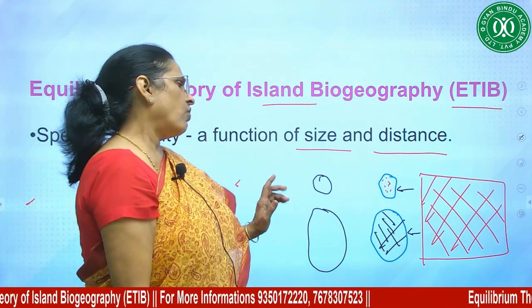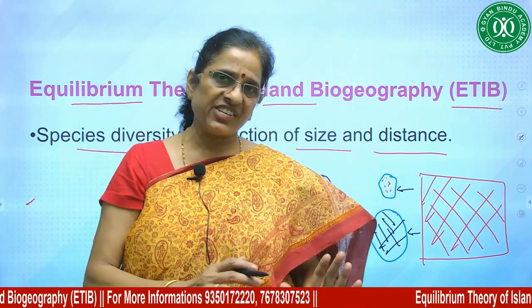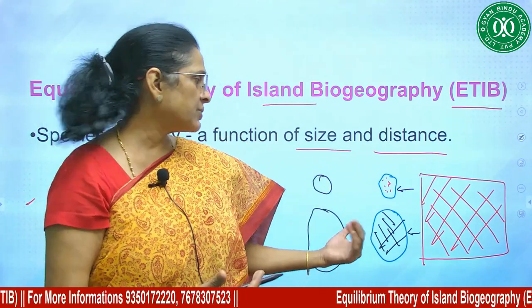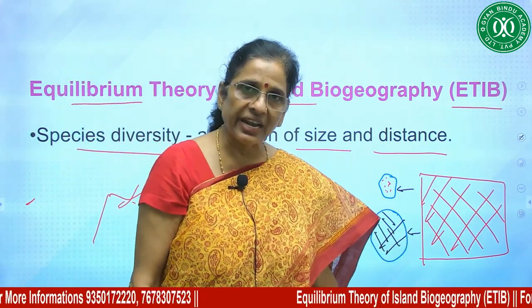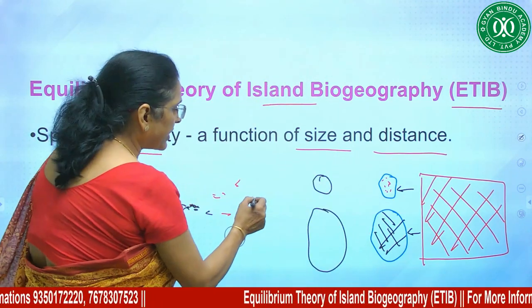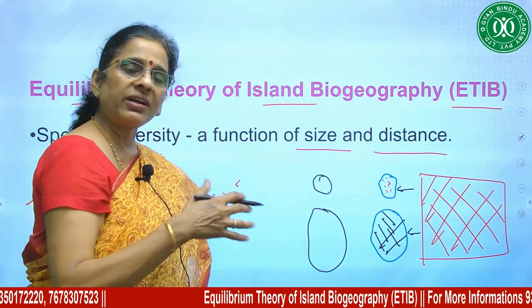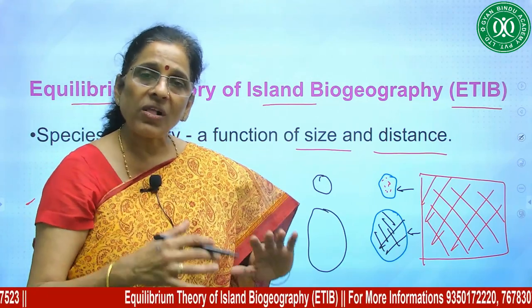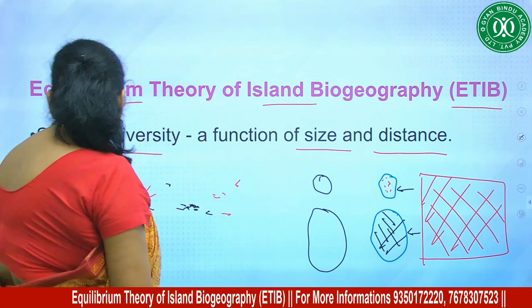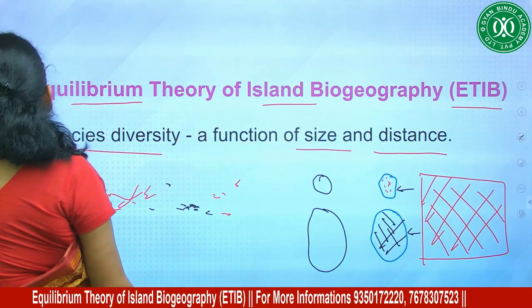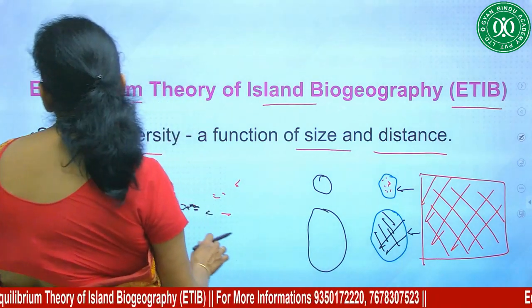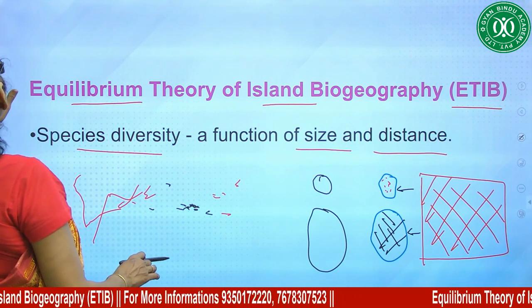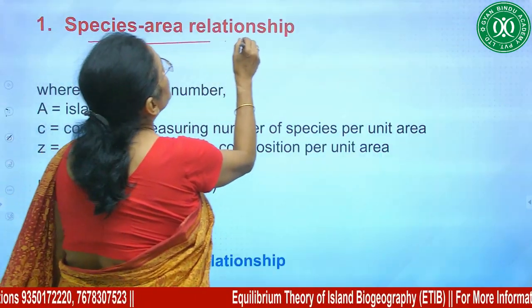Once the island becomes full, extinction of species starts happening. Immigration is taking place and extinction is also taking place — this occurs on both islands, but on the smaller island it is a quicker phenomenon. At a certain point, when all resources are utilized, competition sets in and the species number becomes constant — the composition will change, but the number will remain constant. This is the species-area relationship.